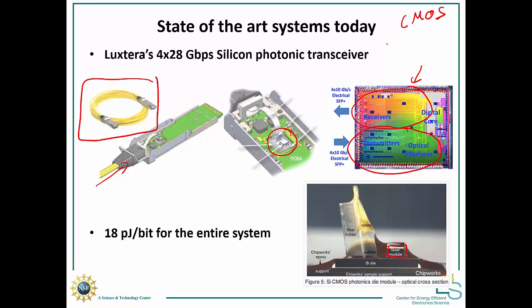And the energy efficiency of these systems today is about 18 picojoules per bit for the entire system. So that means that for every bit of information, the energy that is used by the laser and by the silicon transistors to interpret the information and drive the laser amounts to 18 picojoules. So that's transmitter and receiver. These links are for rack to rack server rooms mostly.